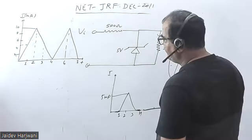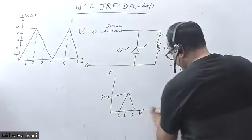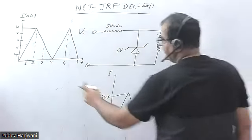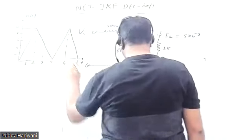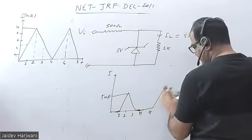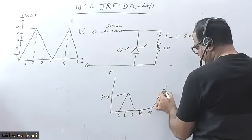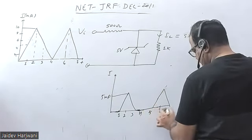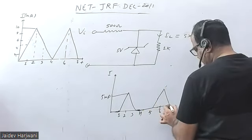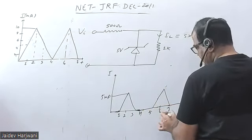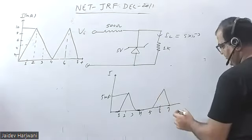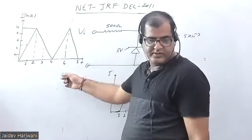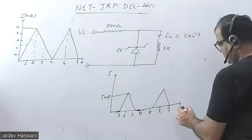The same pattern continues: from 3 to 5 seconds the current will be zero. At 5 seconds, when the current reaches 5 milliamperes again, the diode will conduct from 5 to 6 and 6 to 7 seconds. Then it will not conduct again. This is the current waveform passing through the Zener diode when we apply this input. This is the correct answer for the given question.